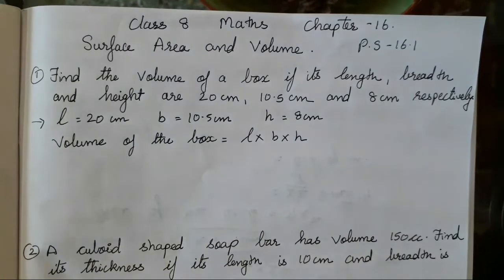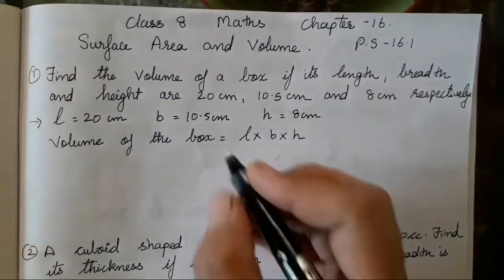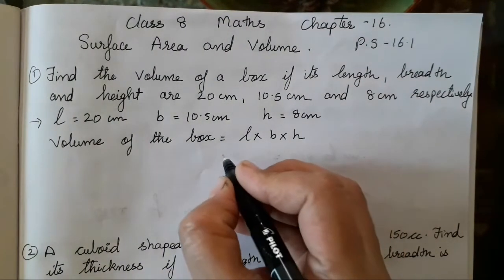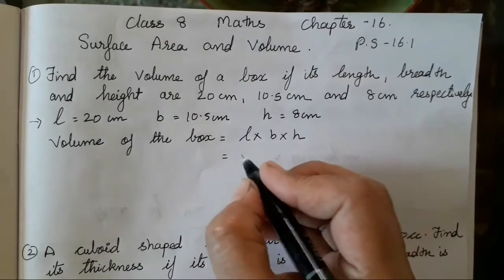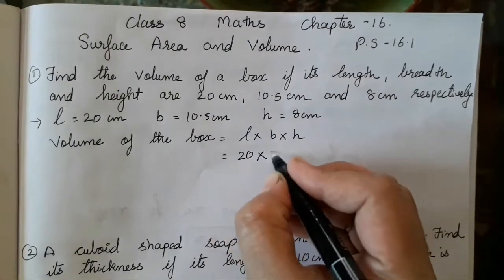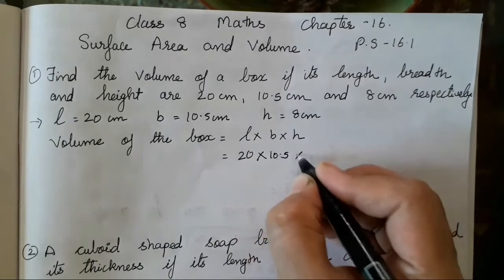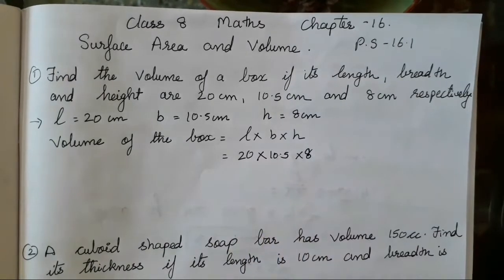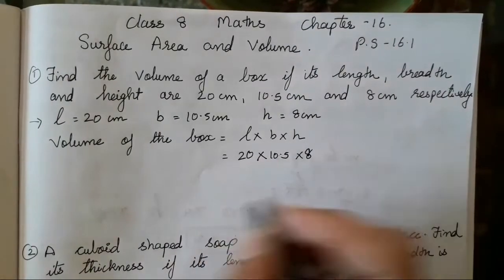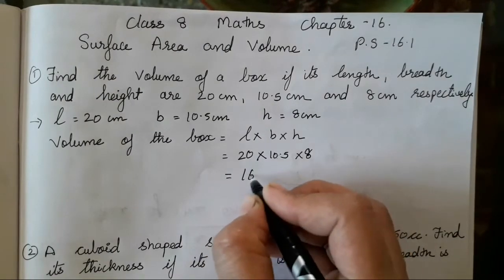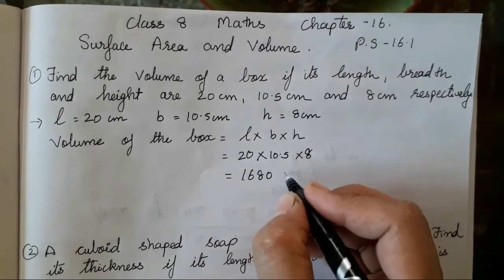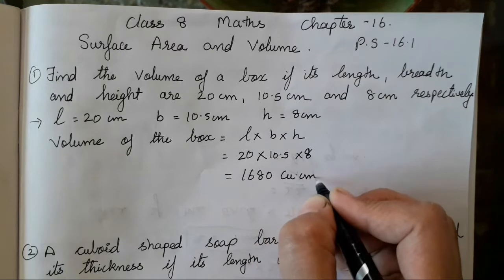This is the easiest formula, we simply multiply. So length is 20, breadth is 10.5, H is 8. Multiply all these three, the answer is going to be 1680 cubic cm.